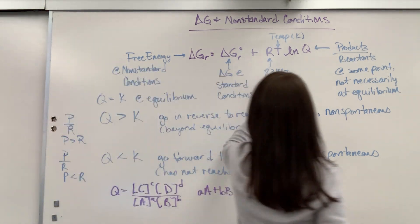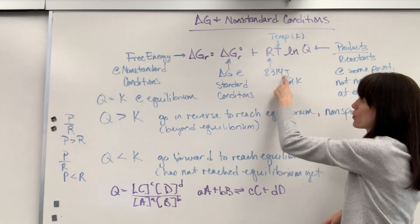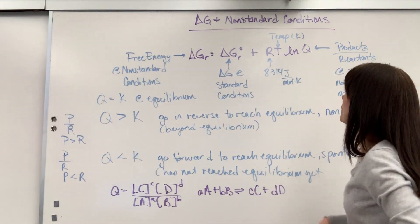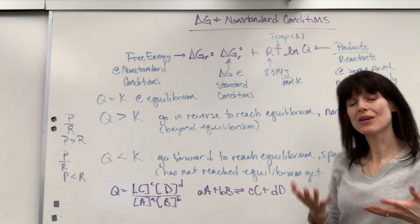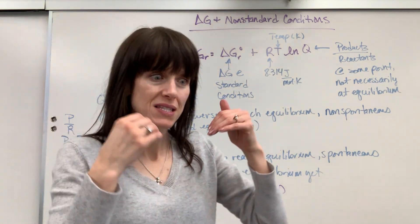And then over here, R, we've got to be careful. The gas constant is 8.314 joules divided by mol times Kelvin, because we're dealing with energy. Temperature, of course, has to be in Kelvin, natural log of Q.